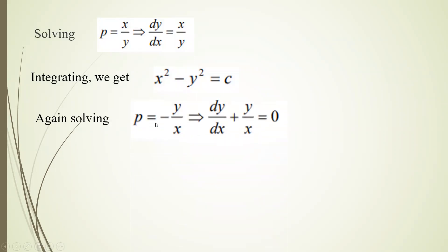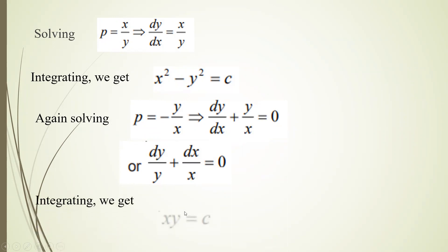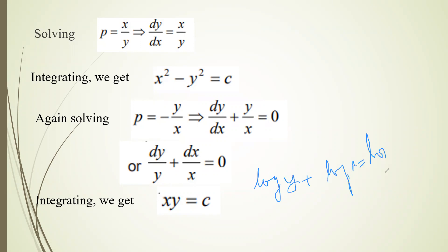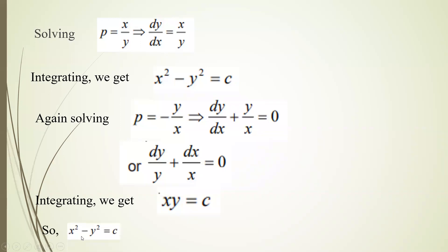Combining both solutions, the required general solution is (x² - y² - c)·(xy - c) = 0. Example 4: Solve p³ + 3x·p² - y³·p - 3x·y³ = 0. This is degree three in p, so three linear factors. Taking common factors: p²(p + 3x) - y³(p + 3x) = 0, giving (p + 3x)(p² - y³) = 0.